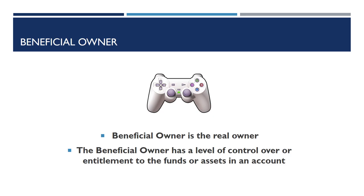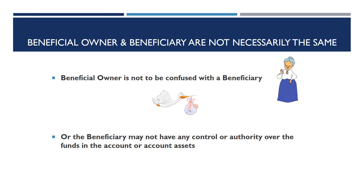This status enables the individual or entity directly or indirectly to control, manage, or direct the account. Beneficial owner and beneficiary are not necessarily the same individual or entity — beneficial owner is not to be confused with a beneficiary. An example would be a grandma who wants to create a trust for the benefit of her unborn grandchildren. Grandma is the grantor and the beneficiaries are unborn, or the beneficiary may not have any control or authority over the funds in the account or account assets.